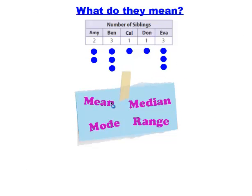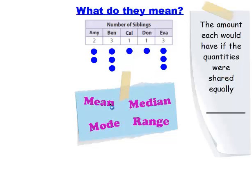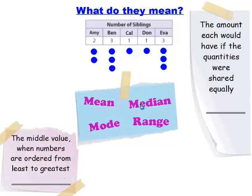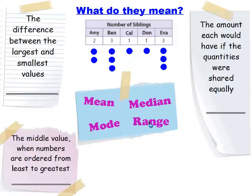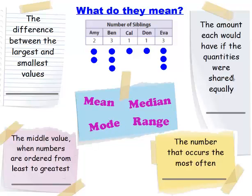So what do they mean? If you're talking about the mean, you're talking about the amount each would have if the quantities were shared equally. So if we look at these dots and we say, what's the mean number? If we shared them all equally, you can see that 2 would be the mean in that set of numbers. The median is the middle value when the numbers are ordered from least to greatest. The range is the difference between the largest and the smallest values. And the mode is the number that occurs most often.